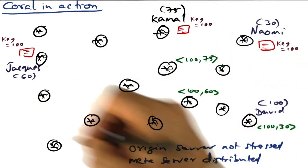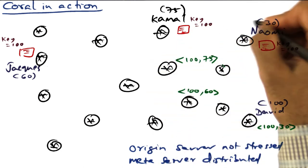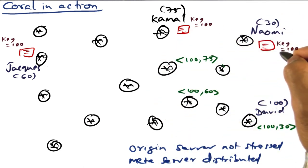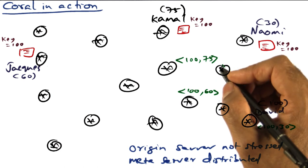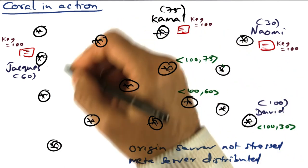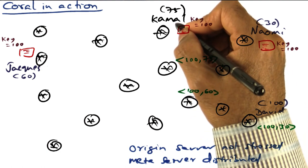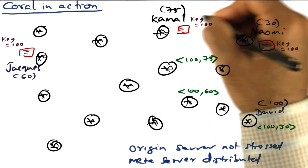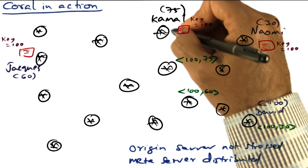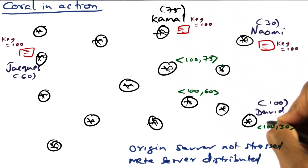So as a result, you can see that the metadata server load is distributed and the origin server is also not stressed. That's the nice thing about the Coral sloppy DHT approach. So the key takeaway in the Coral approach is that even though an individual request may have a little bit more latency because we're not trying to reach the desired destination directly, but going through some intermediate hops, in particular, having the distance to the desired destination, you're going to increase the latency a little bit.